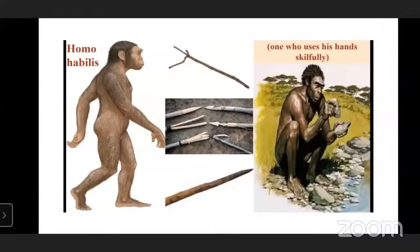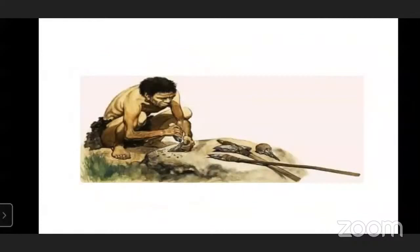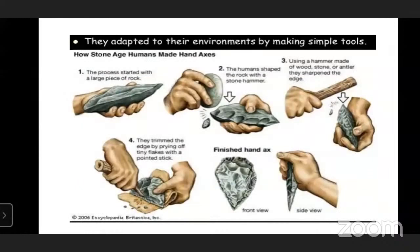Tools like hand axes and cleavers were made by Homo Erectus. Before Homo Erectus, there was Homo Habilis, who was making choppers by hitting one pebble on another stone. In this picture, Homo Habilis is doing pebble chopping on the stone. They adapted to their environments by making simple tools.